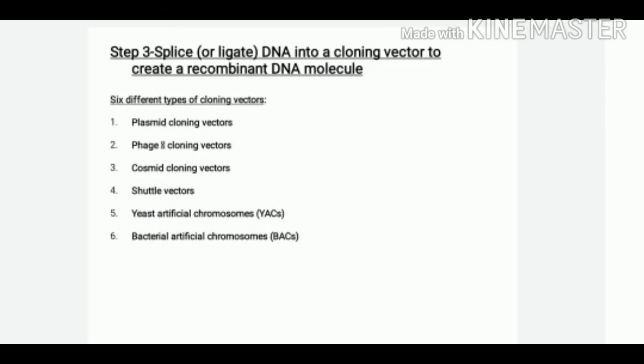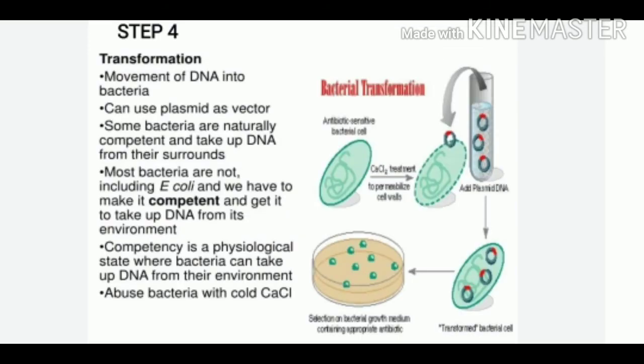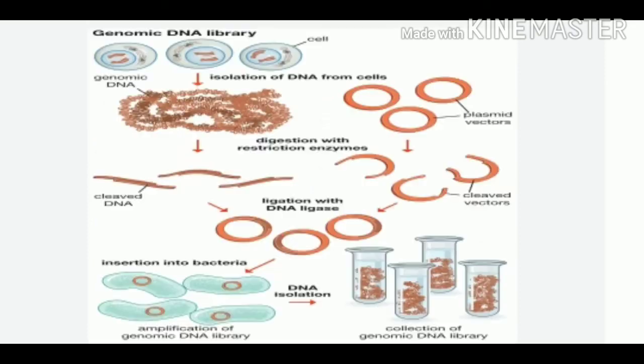The third step involves ligating the DNA into a suitable cloning vector to create a recombinant DNA molecule, and various types of cloning vectors can be used. The next step in the construction of a genomic library is to transform the recombinant DNA — that is, the cloning vector plus the DNA fragment — into a host that will replicate and transfer copies to the progeny. This diagram shows an overview of the construction of a genomic library.